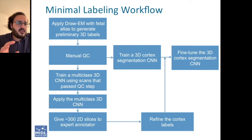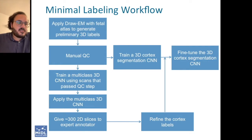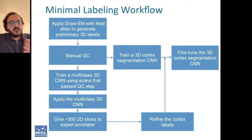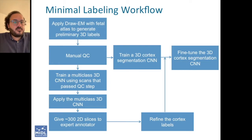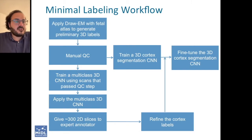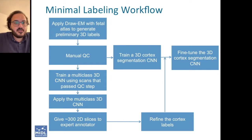We then train a 3D multi-class neural network using those scans that pass the QC step. We apply the network on some of the data and give only a sample of the 2D slice outputs to our colleague, an expert annotator at King's College London based at St. Thomas Hospital. In total, fewer than 300 slices were used for refinement.